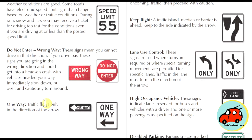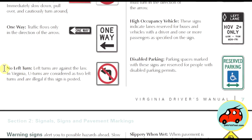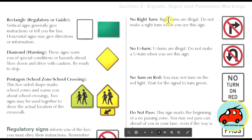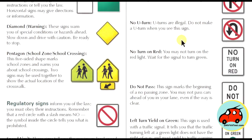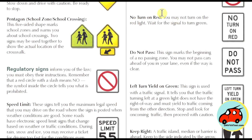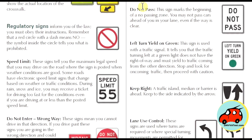One-way signs mean traffic flows only in one direction. No left turns means left turns are against the law; in Virginia, U-turns are considered two left turns and are illegal if this sign is posted. No right turns means right turns are illegal. No U-turns means U-turns are illegal. No turn on red means you may not turn on a red light — wait for the signal to turn green. Do not pass marks the beginning of a no-passing zone; you may not pass cars ahead of you in your lane, even if the way is clear.